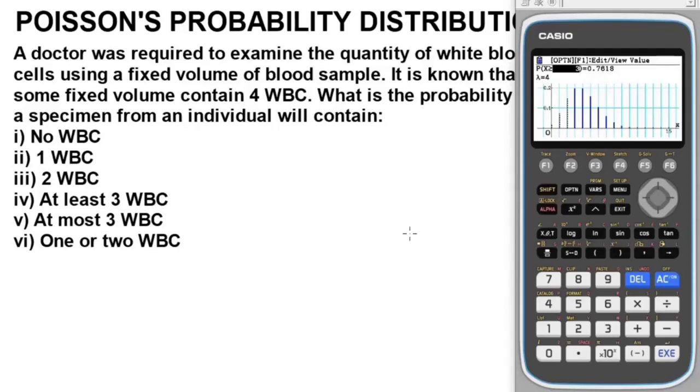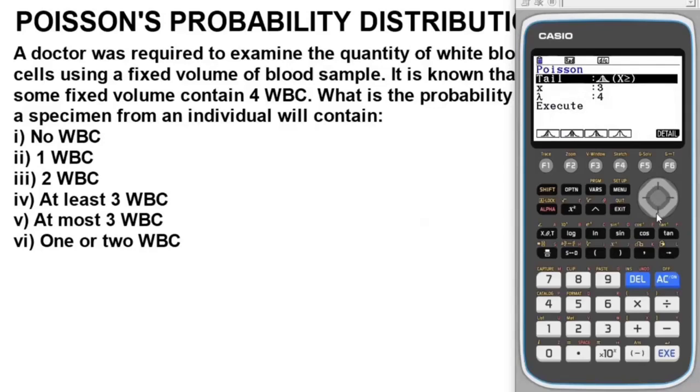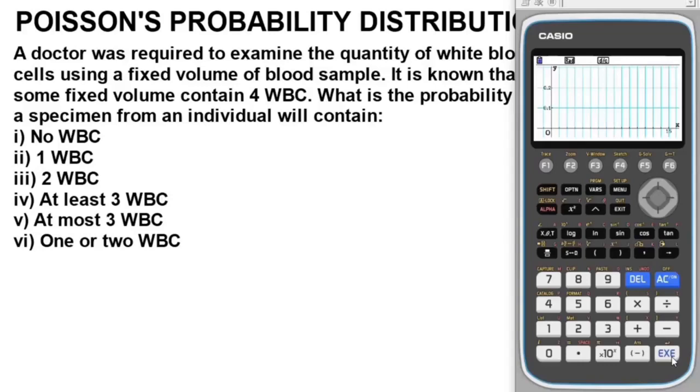For at most three white blood cells, we have the same x value of 3. For at most you work with less than or equal, while for at least you work with greater than or equal. Press F4 to change the sign. The answer is 0.4334.